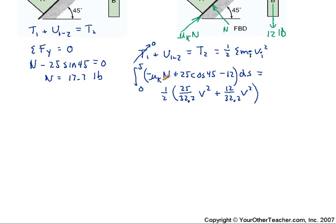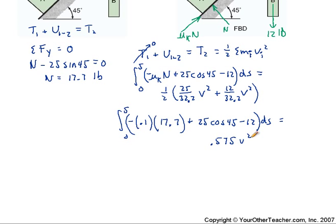Now moving down, what we're going to have then is let's substitute in some values for work. So we're going to have mu sub k, which is 0.1, times our normal force, which we already calculated. We'll bring down our other values. And we're going to set these equal to, if we sum up this term on the right side of the equation, we get 0.575 V squared.